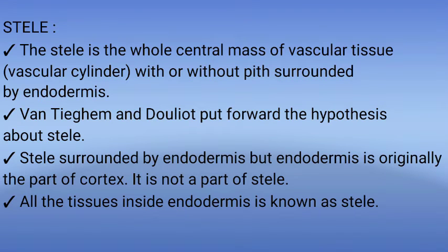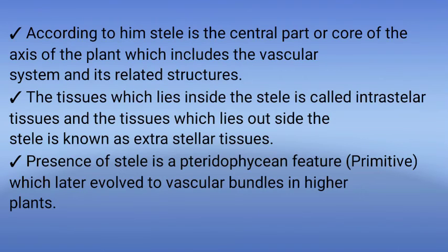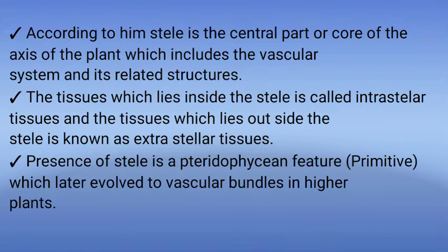The stele is the whole central mass of vascular tissue or vascular cylinder, with or without pith, surrounded by endodermis. Van Tieghem and Douliot put forward the hypothesis about the stele. The stele is surrounded by endodermis, but endodermis is originally the part of cortex and not a part of the stele. All the tissues inside the endodermis are known as the stele. According to this hypothesis, the stele is the central part or core of the axis of the plant, which includes the vascular system and its related structures. Tissues inside the stele are called Intrastelar Tissues, and tissues outside are Extrastelar Tissues. Presence of a stele is a pteridophytic (primitive) feature, which later evolved to vascular bundles in higher plants.